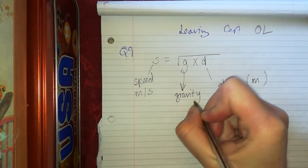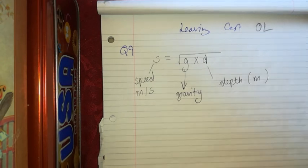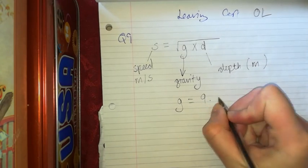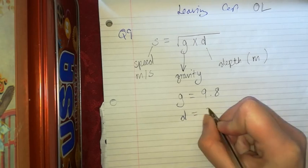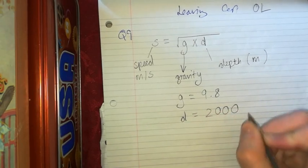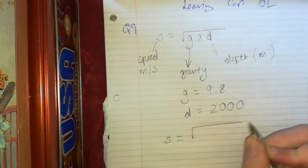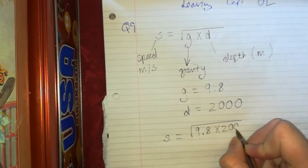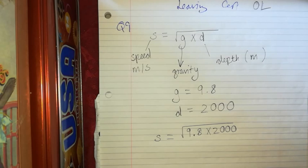So find S, the speed of the tsunami when the earthquake occurs at a depth of 2,000 meters. The gravity G they tell us is 9.8. The depth is at 2,000 meters and the depth has to be in meters. So the speed is going to be the square root of 9.8 times 2,000.